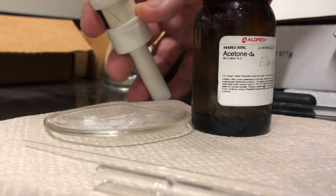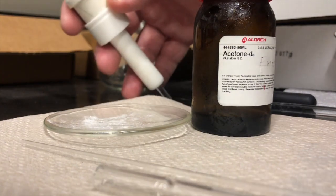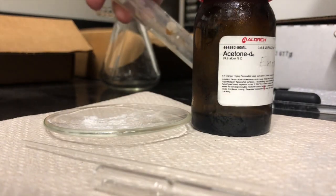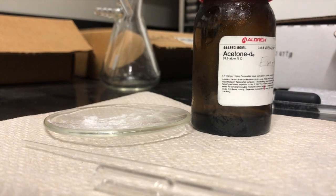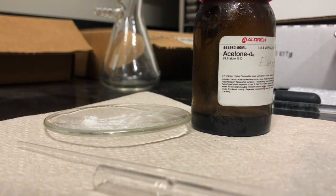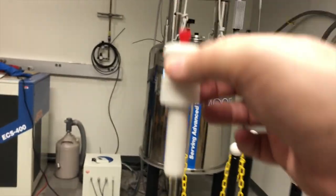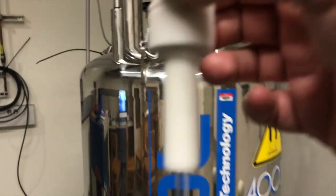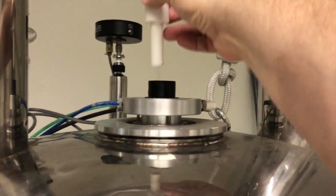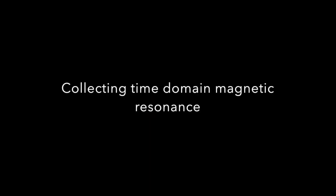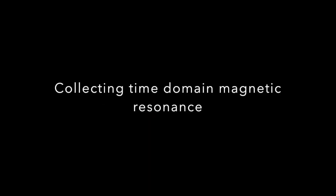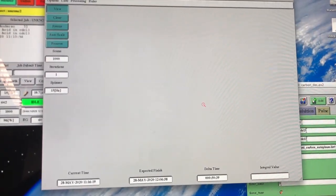Then we place the tube in a spinner. Make sure that the tube is at the appropriate height to be analyzed by the instrument. Then it is time to place the sample with the spinner into the magnet. You can see the sample will go down into the center of the large superconducting magnet. At this point we can start collecting the data.